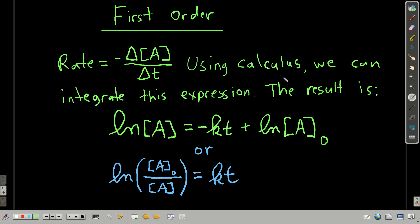Focusing on first order rate laws: we know the rate equals negative change in concentration of A over change in time. After using some calculus and integrating this, we get the result called the integrated rate law for a first order reaction. This you need to memorize.